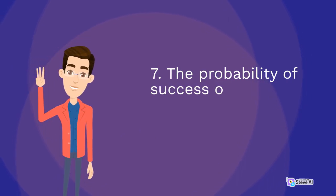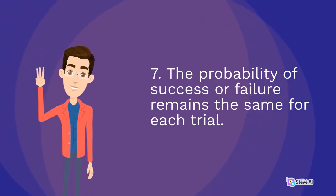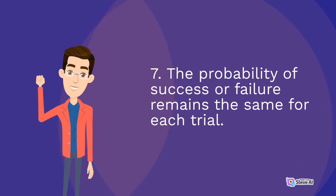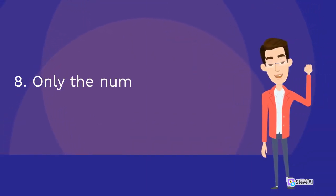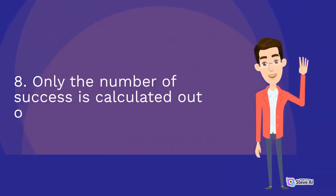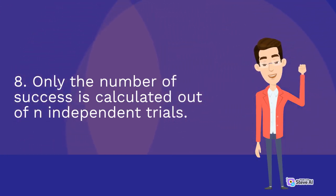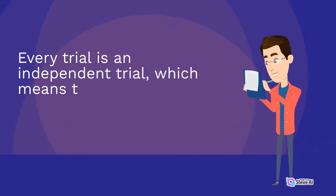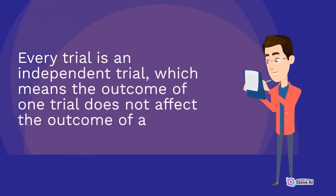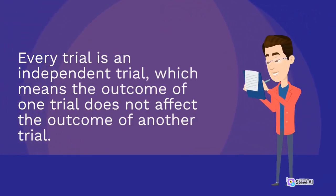7. The probability of success or failure remains the same for each trial. 8. Only the number of successes is calculated out of n independent trials. Every trial is an independent trial, which means the outcome of one trial does not affect the outcome of another trial.